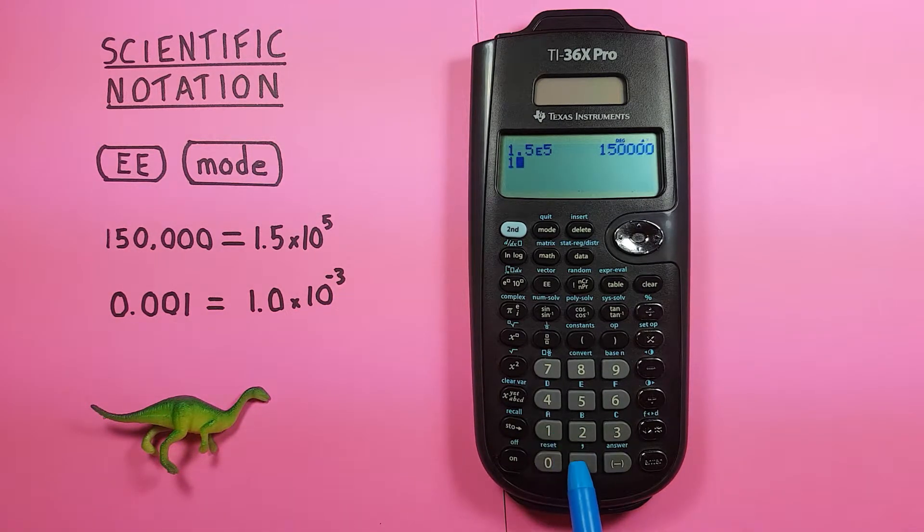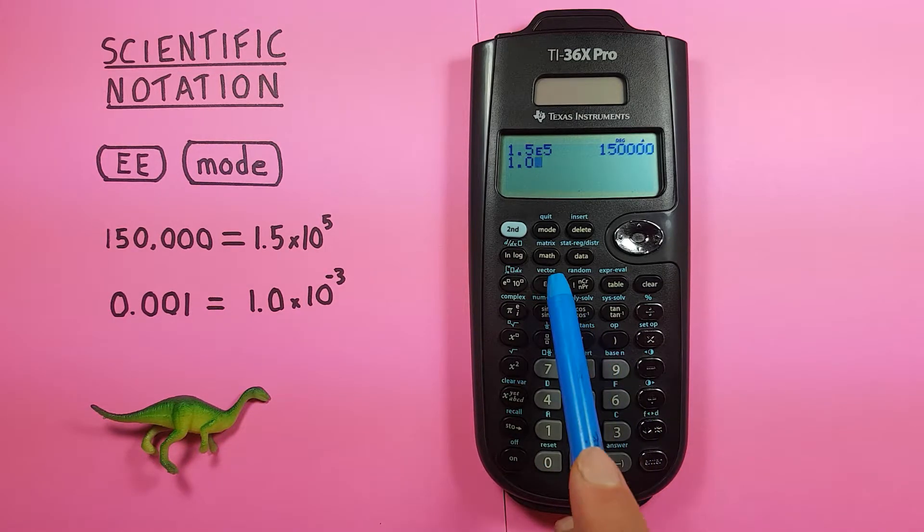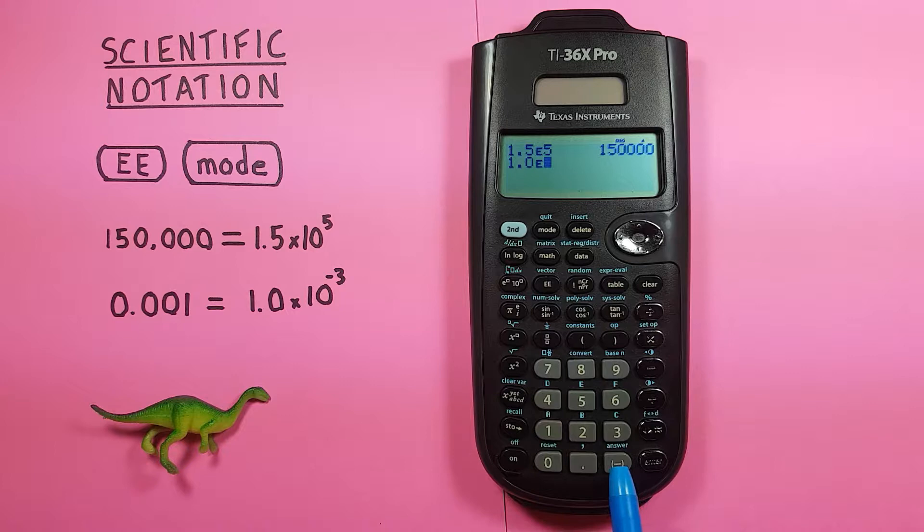Here we can go 1.0 or just 1, EE, and then we use the negative button there, and then the 3, so for a negative 3 power. Press enter, and there you go. You can see it's the same as 0.001.